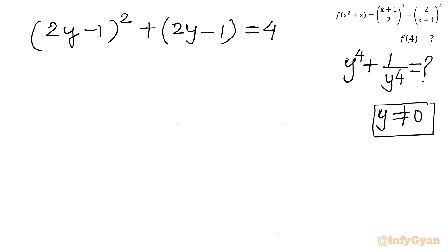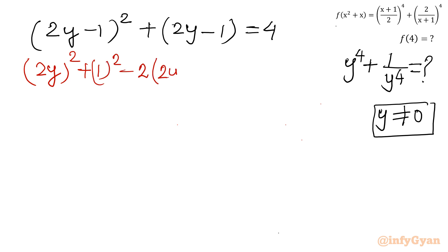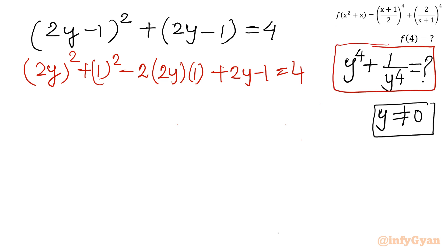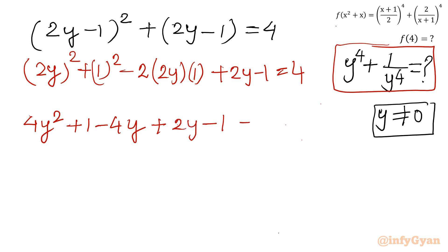Let's solve (2y minus 1) squared plus (2y minus 1) equal to 4. Applying the (a minus b) squared identity, this gives 4y squared plus 1 minus 4y plus 2y minus 1 equal to 4. The plus 1 and minus 1 cancel, leaving 4y squared minus 4y plus 2y equal to 4.